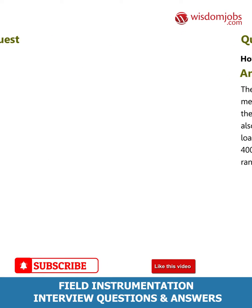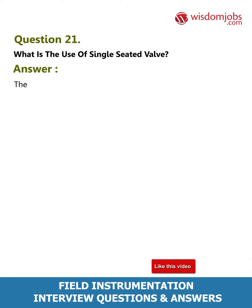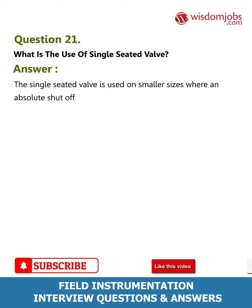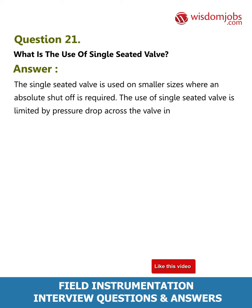Question 21: What is the use of a single seated valve? Answer: The single seated valve is used on smaller sizes where an absolute shutoff is required. The use of the single seated valve is limited by the pressure drop across the valve in the closed or almost closed position.